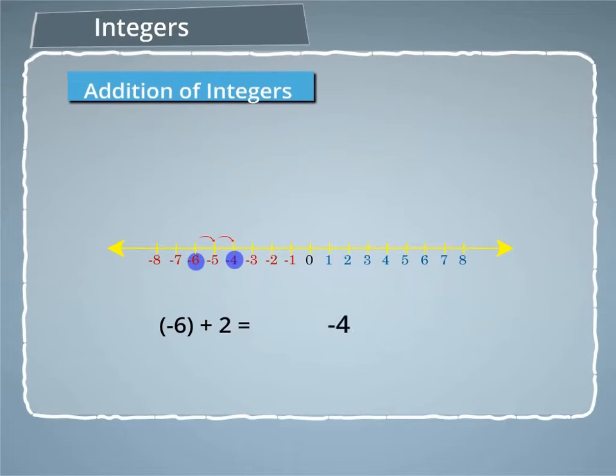But adding -2 to a number means moving two steps to the left of the number.